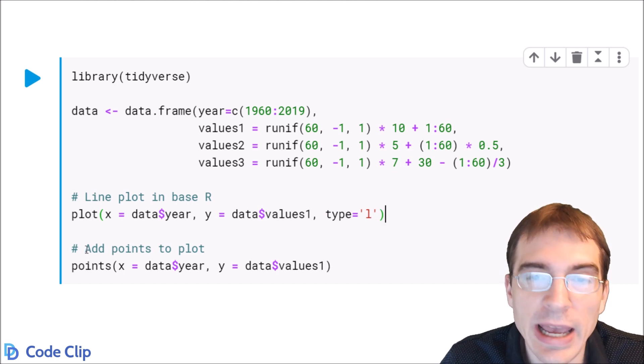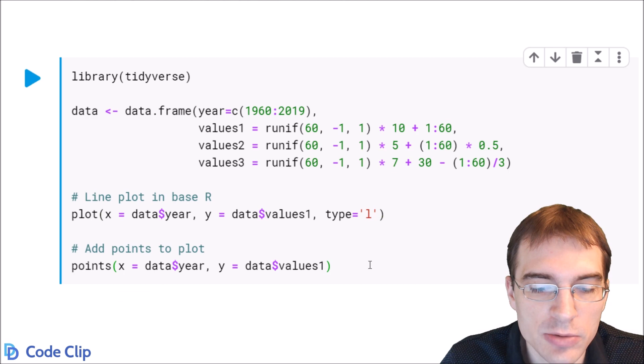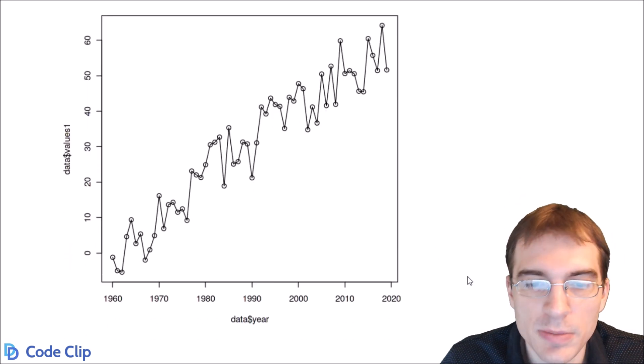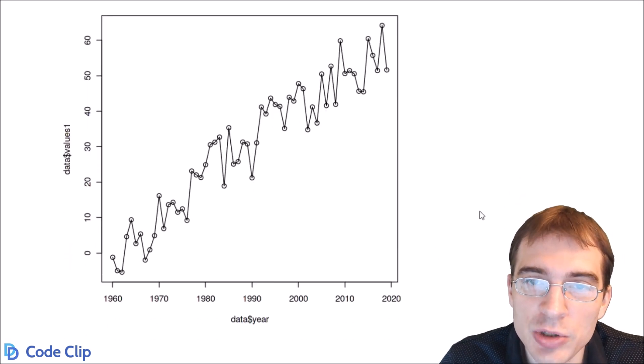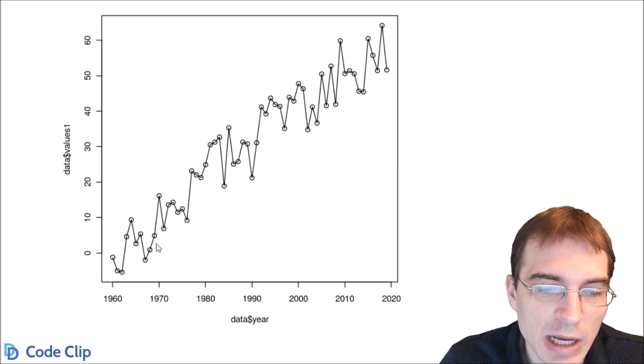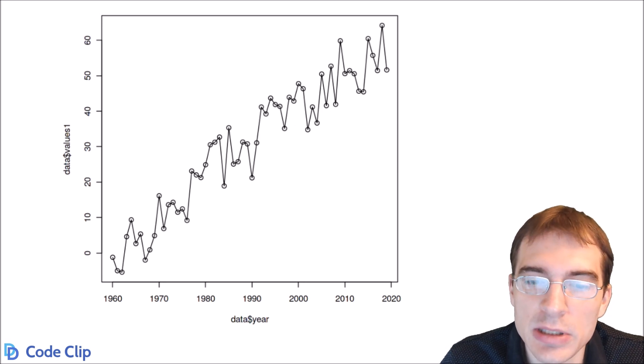I'm also going to add points to the plot so let's run this and see what the result is. This line plot helps us see visually a strong positive growth trend over time in this data we created.